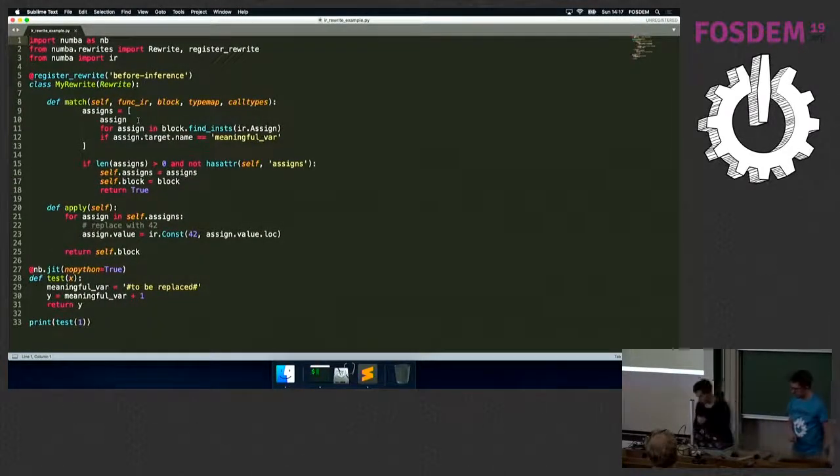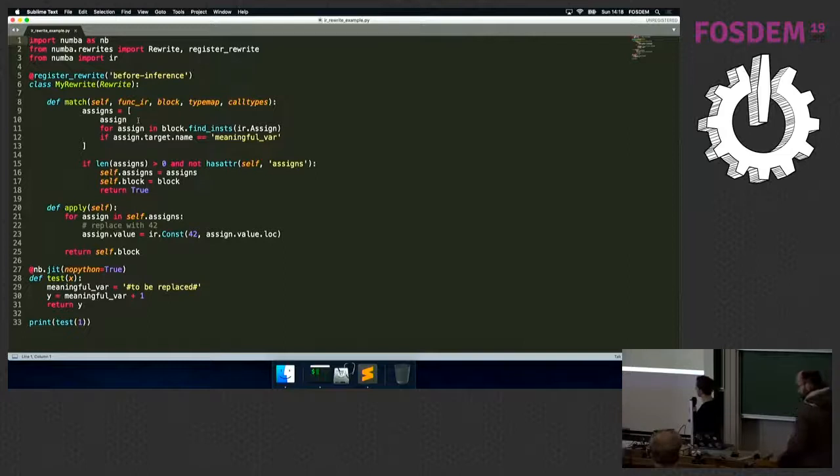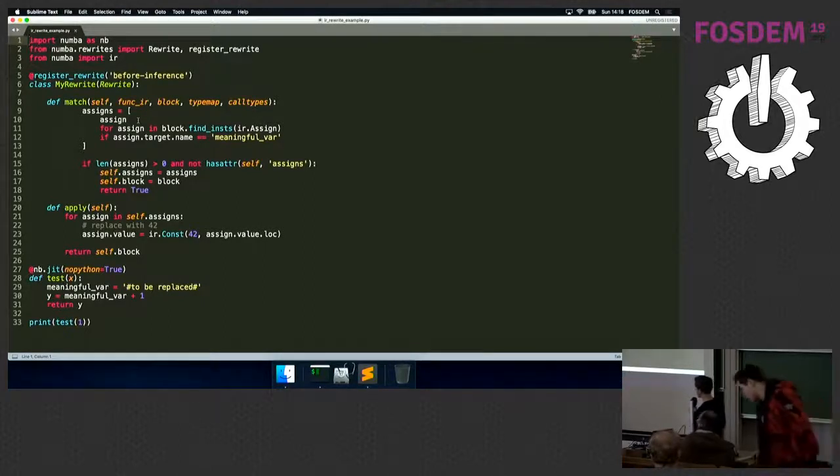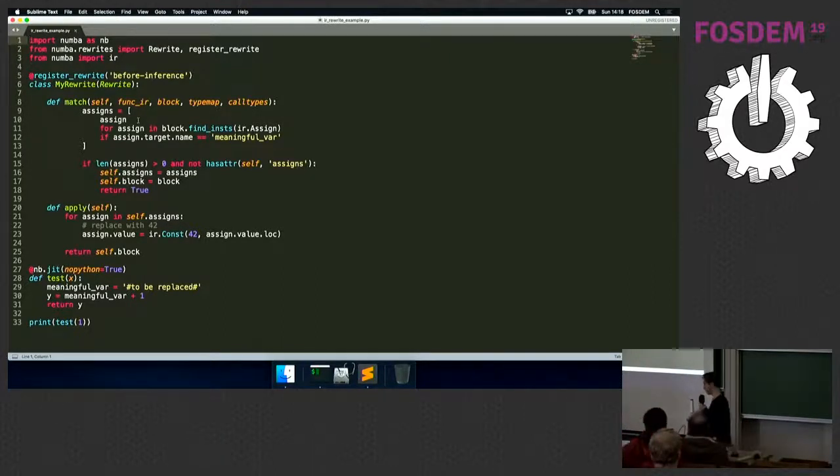This is basically an example of the rewrite. As I said, this is a very un-useful example, obviously. But we have here a very meaningful variable that we want to be replaced. As you see here, you have the function block. And you can search for instances of assign expression. This is an assign expression. You will search for any assign expression that has a target name, this is a target meaningful var. We return true if we have any matches. And then you can replace it with a constant of 42. Believe me, it will return 43. Because 42 plus 1 is 43.